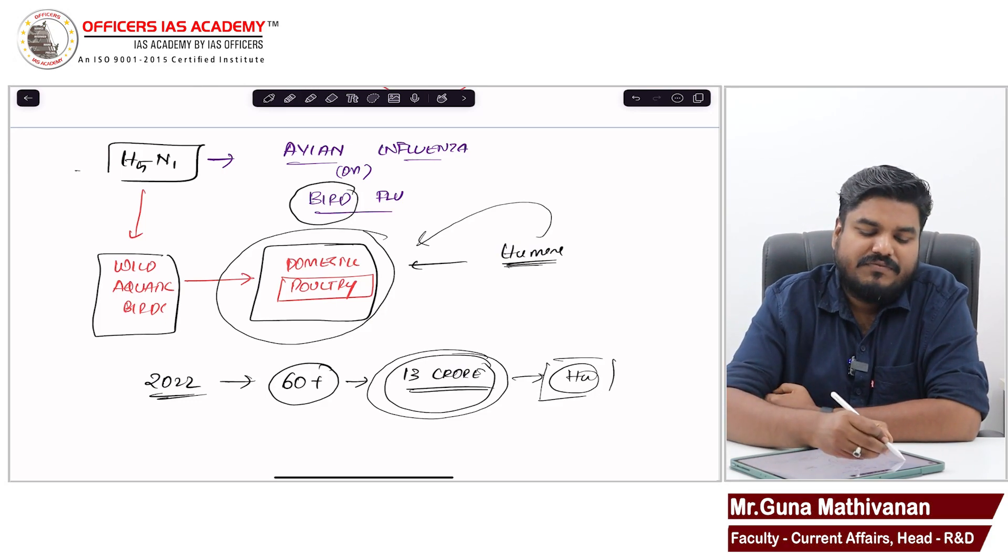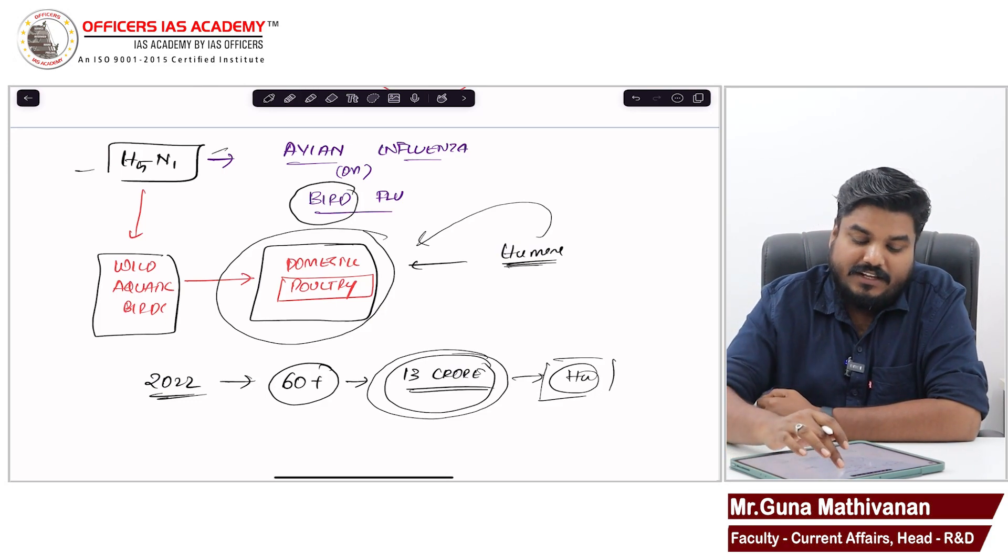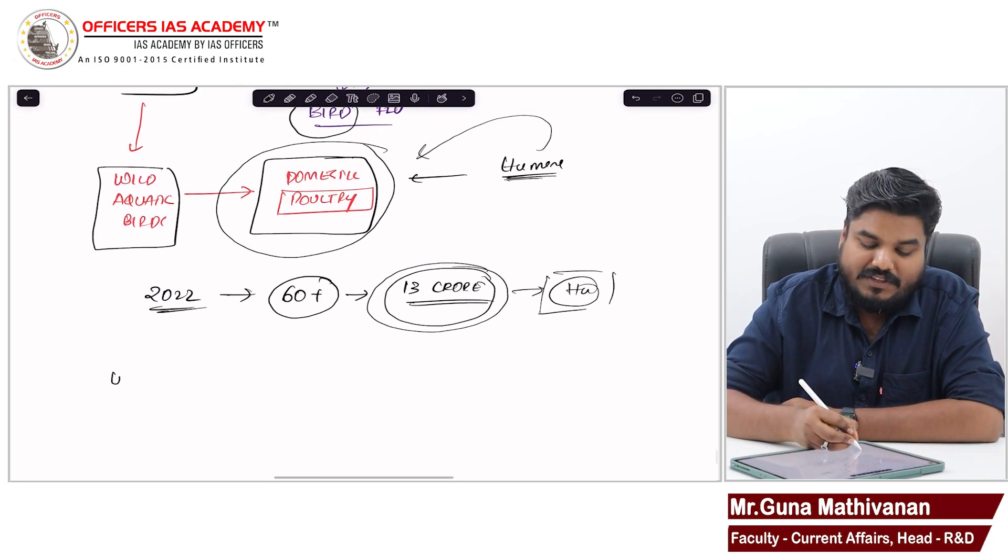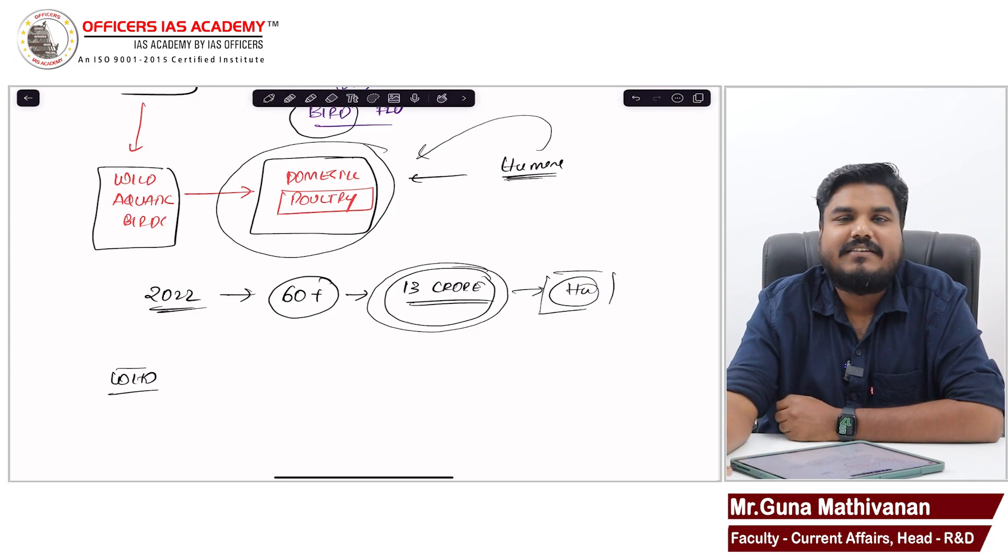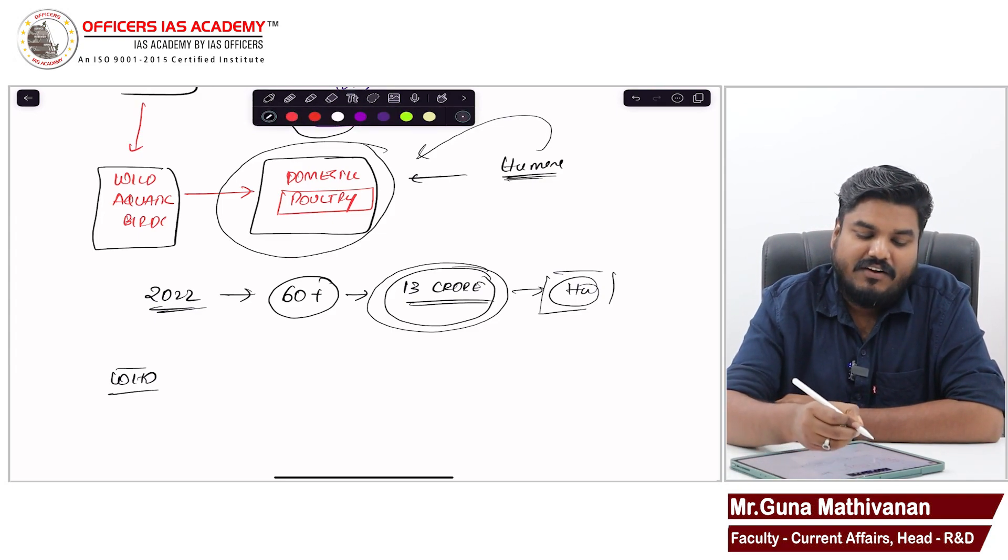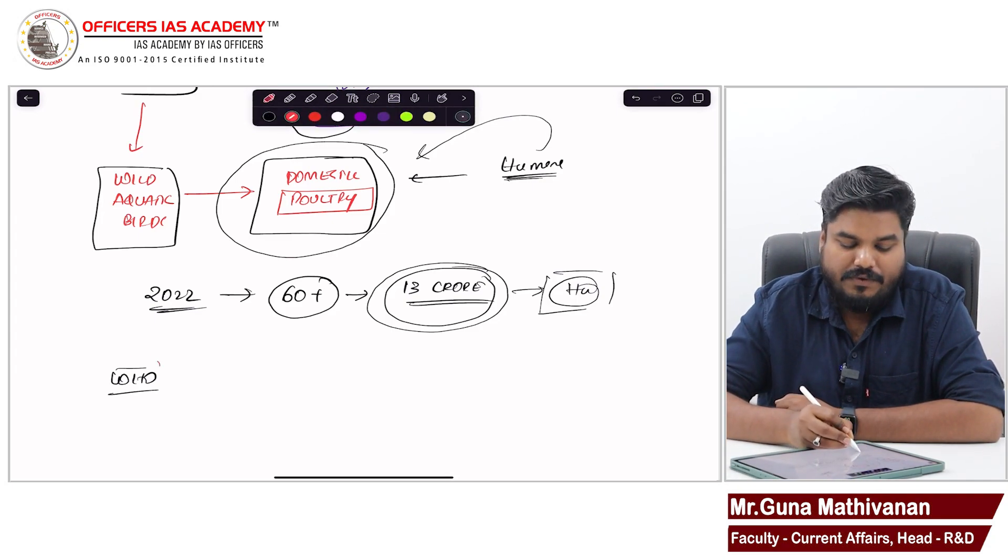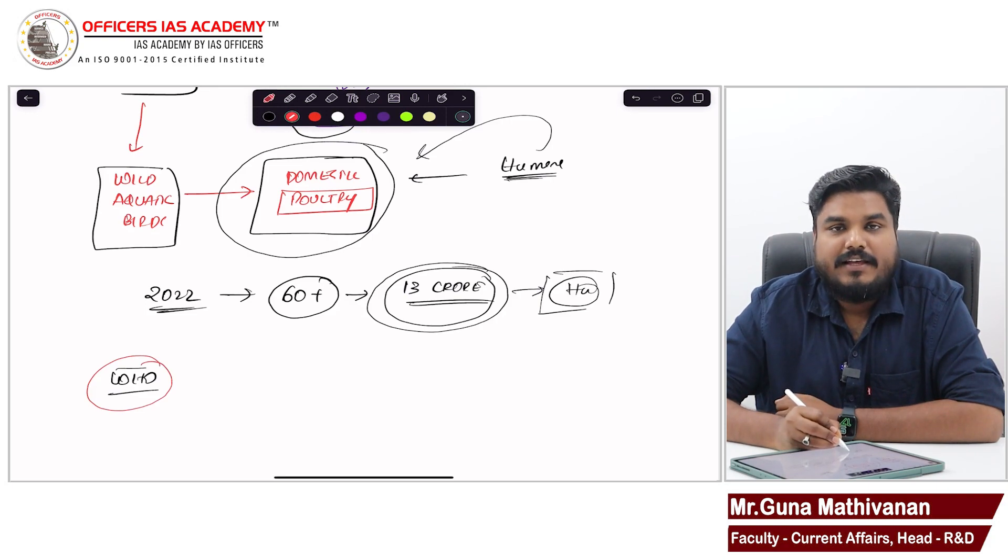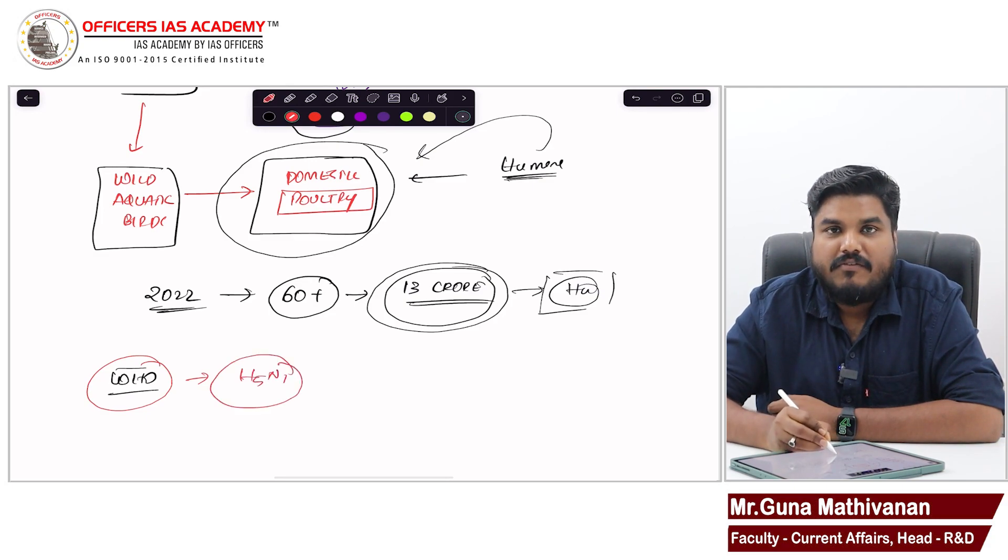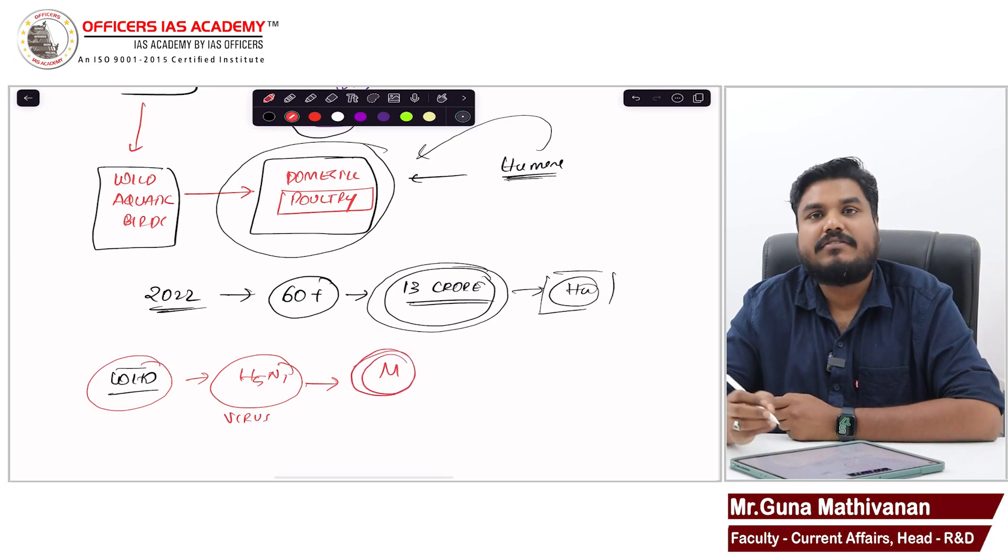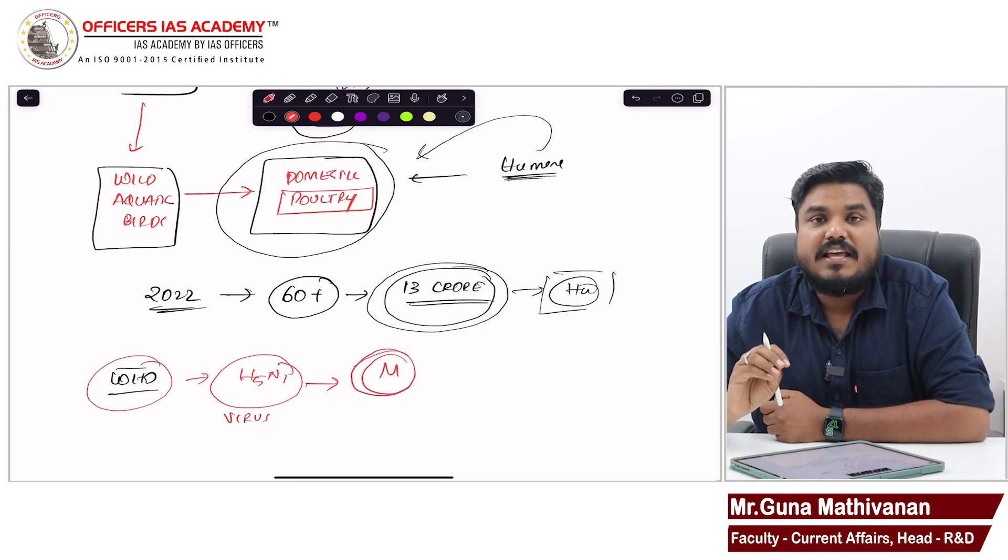Now why are we discussing H5N1 in detail? Recently, WHO has come up with a report. The World Health Organization gave a report that this H5N1 virus is also infecting mammals - it is infecting dogs, cats, cows.